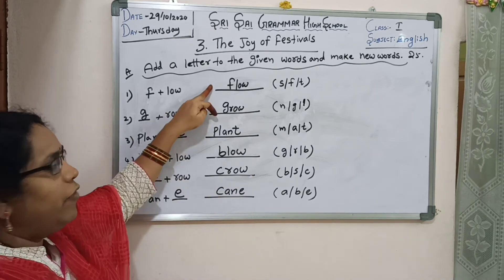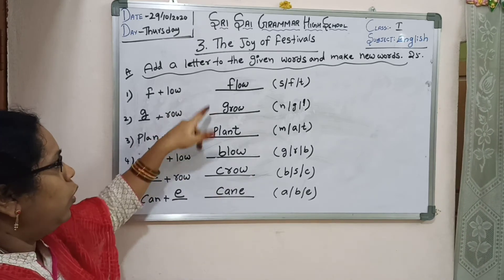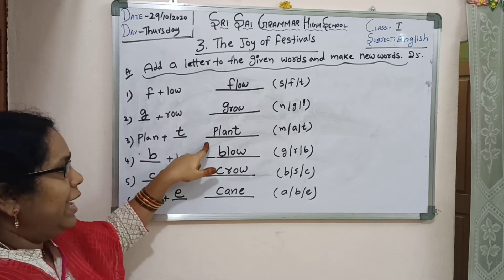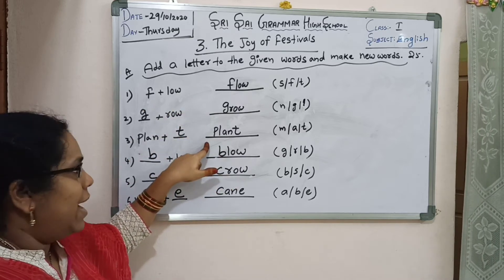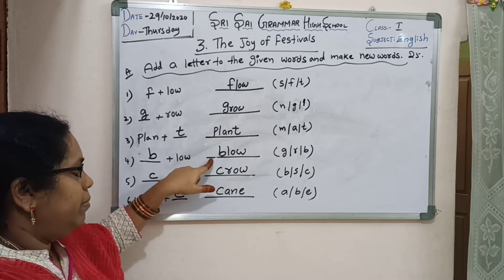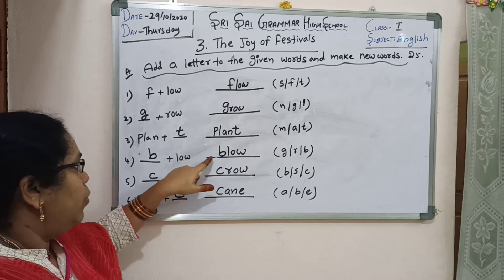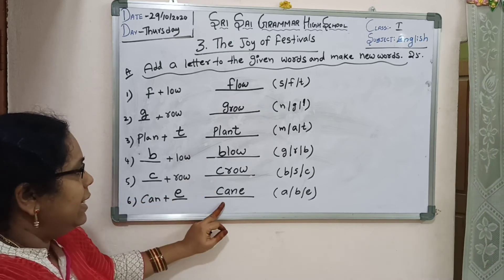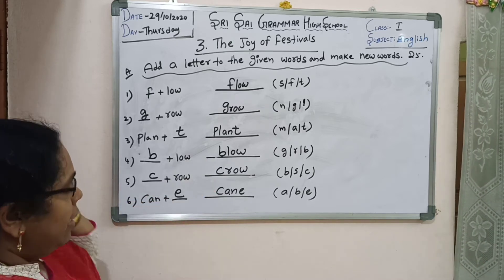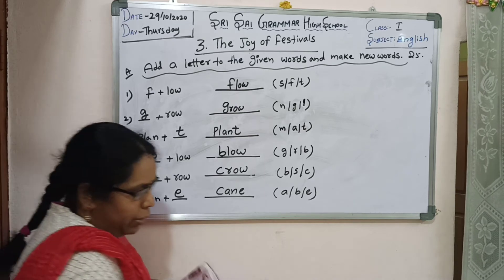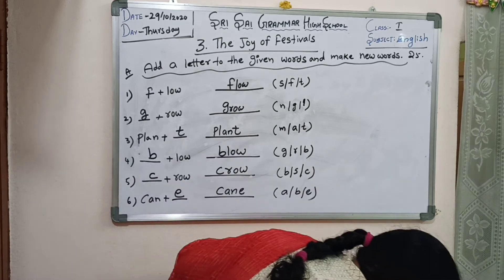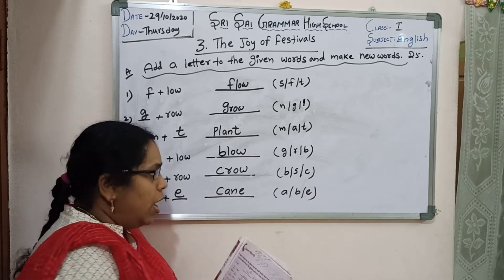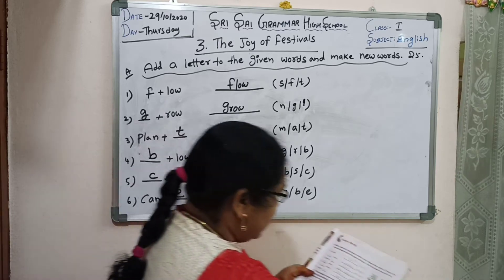Once again: FLOW — flow, GROW — grow, PLANT — plant, BLOW — blow, CROW — crow, CANE. Add the letter and become a new word. We can add the letter and it will be a new word.